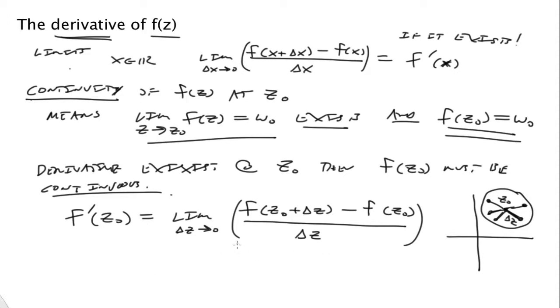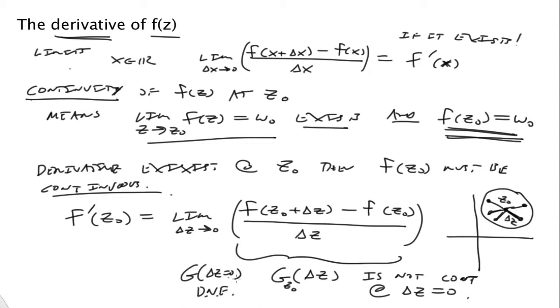So we want to know, does this exist? Okay, so of course, this function itself, if you want to call this g at a particular point z0, but really it's just a function of delta z. This function is not continuous at delta z equals 0. Okay, we're talking about f itself is continuous at z0, but the ratio of the difference, the differential here on the top and bottom, it itself is not continuous. We can't just plug in g at delta z equals 0 does not exist, so it cannot be continuous.